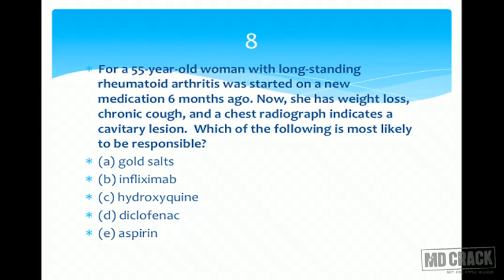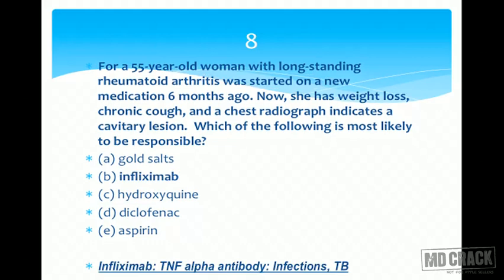Among the options, infliximab stands out as different. Aspirin and diclofenac are NSAIDs; hydroxychloroquine is a DMARD acting on the immune system; gold salts have anti-inflammatory and cytotoxic effects. Infliximab is a biological response modifier — a monoclonal antibody against TNF-alpha. Because it significantly suppresses immunity, it makes patients highly susceptible to infections, especially tuberculosis. The answer is infliximab.